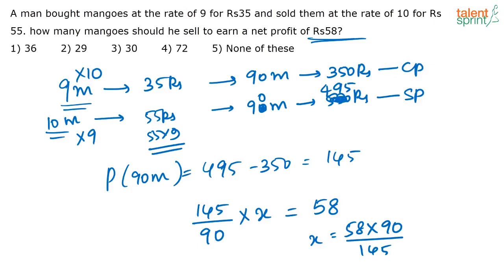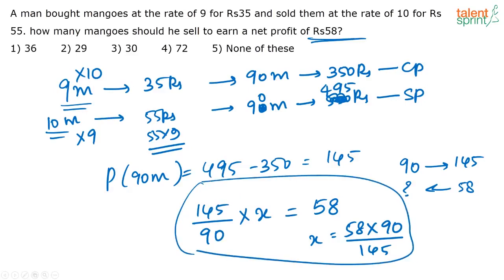A lot of you are giving me the correct answer. For 90, the profit is 145. For how much the profit is 58? That's all you have to find out. See, for 90 mangoes, you are getting a profit of 145 rupees. So for how many mangoes will you get a profit of 58? You can directly cross multiply here also. You needn't even write this step. I just wrote it so that it's clear. I explain it better.